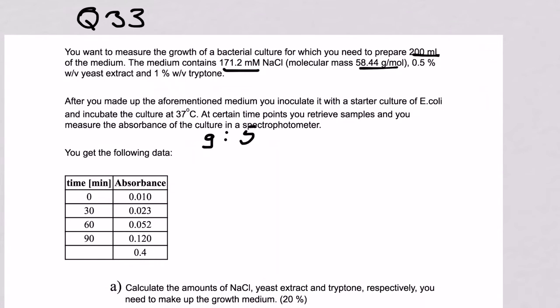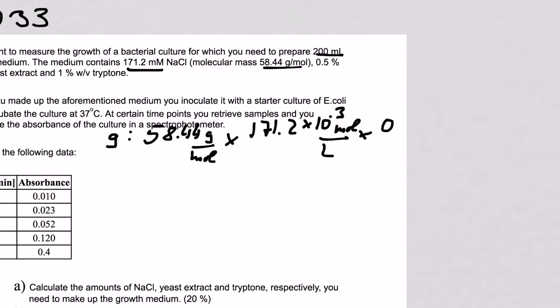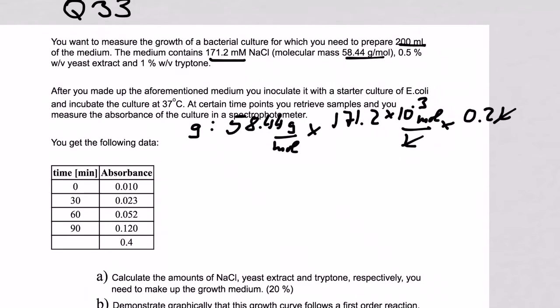So we have 58.44 grams per mole. We want to have the grams and cancel out the moles. So we have 171.2 times 10 to the minus 3 mole per liter, and we have 200 milliliters, which I write as 0.2 liters. So that all cancels out. And if we do this calculation we get exactly 2.0 grams of sodium chloride.